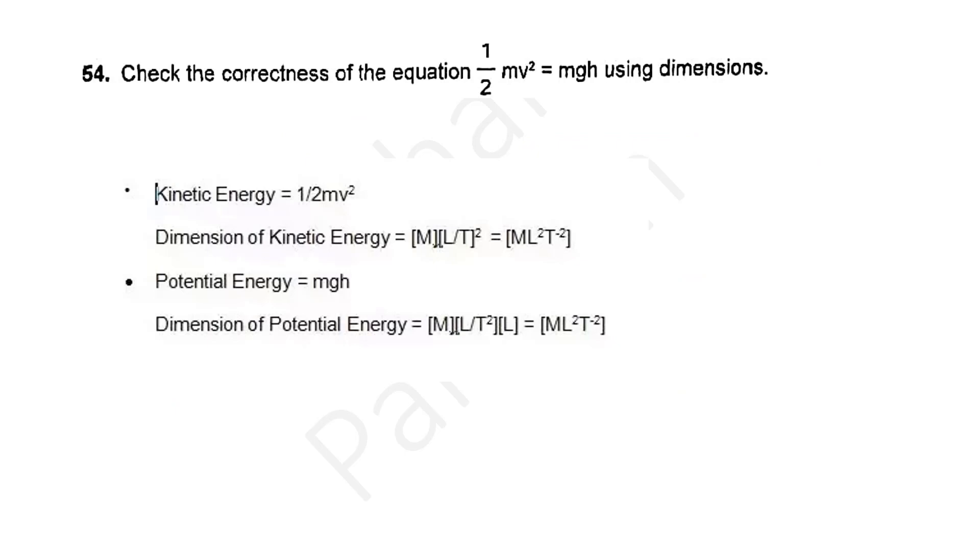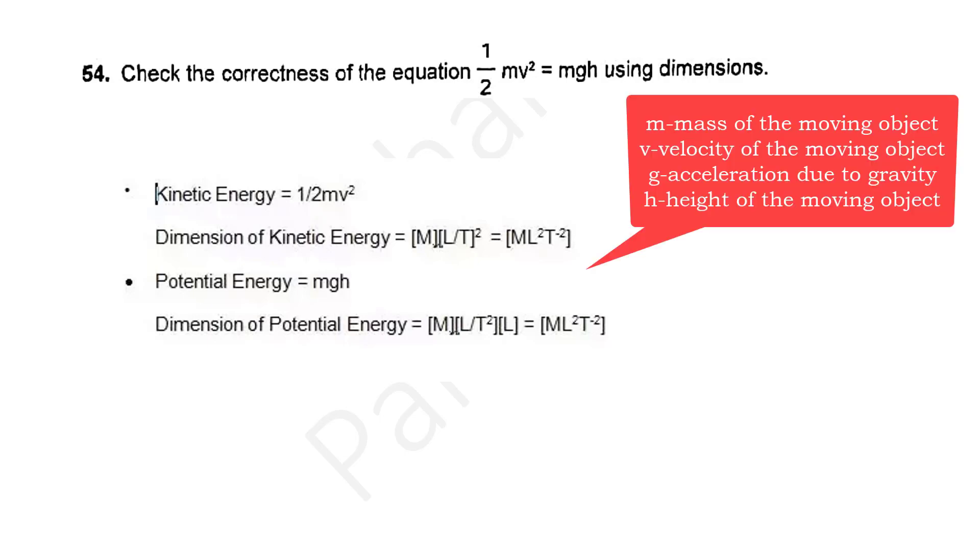For example, in your previous year question paper, they have asked to check the correctness of the equation half mv square is equal to mgh using dimensions. This is a two mark question. Half mv square means it is kinetic energy and mgh means it is potential energy. Half is a constant. So just substitute the dimensions of the physical quantity. Here in kinetic energy, it is mass and velocity. Same way do it for potential energy. You will find that the dimensional formula of kinetic energy and potential energy both are same. Hence, you can prove that the kinetic energy is equal to potential energy.